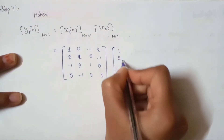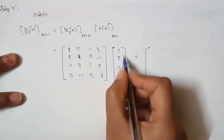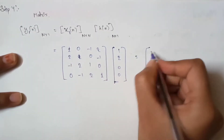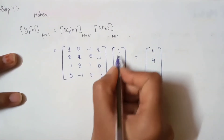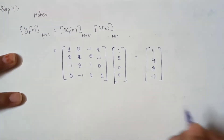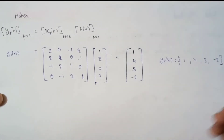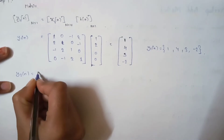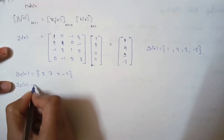We multiply the circulant matrix of x1(n) by the impulse sequence [1, 2, 0, 0]. Since only the first two elements of h(n) are non-zero, we get: 1×1 + 2×0 = 1, then 2×1 + 1×2 = 4, then −1×1 + 2×2 = 3, then 0×1 + (−1)×2 = −2. So y1(n) = [1, 4, 3, −2]. Similarly, calculate y2(n), y3(n), and y4(n) as homework.